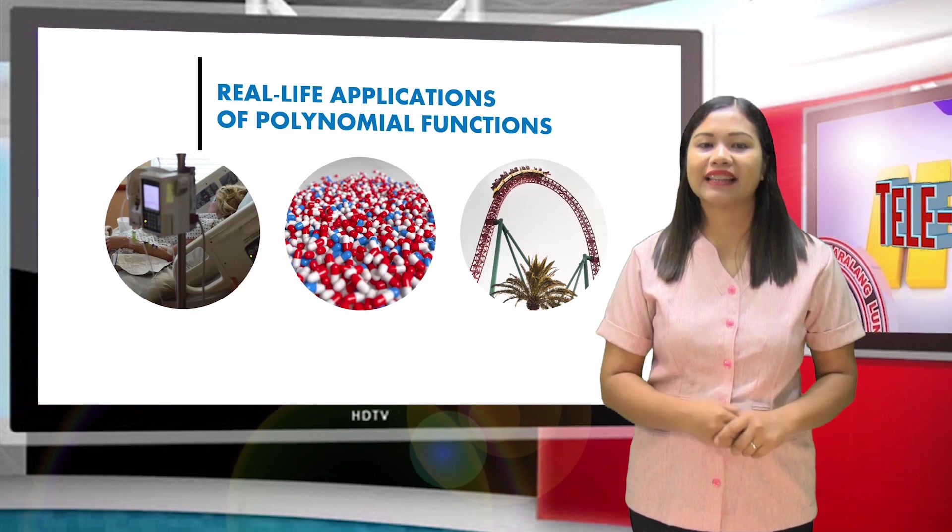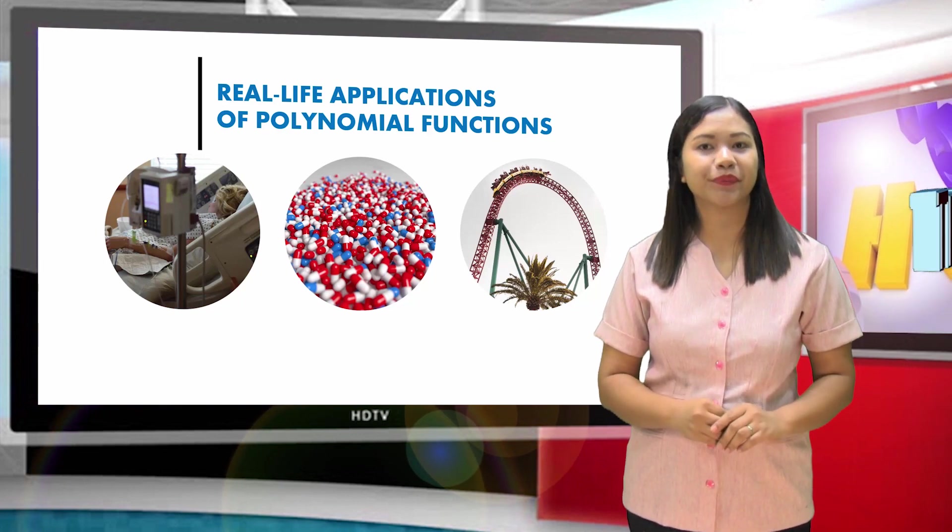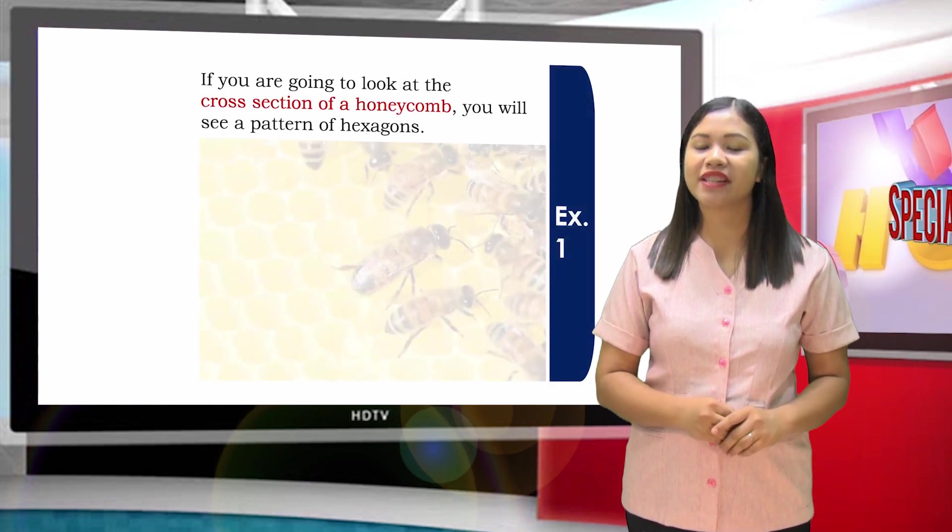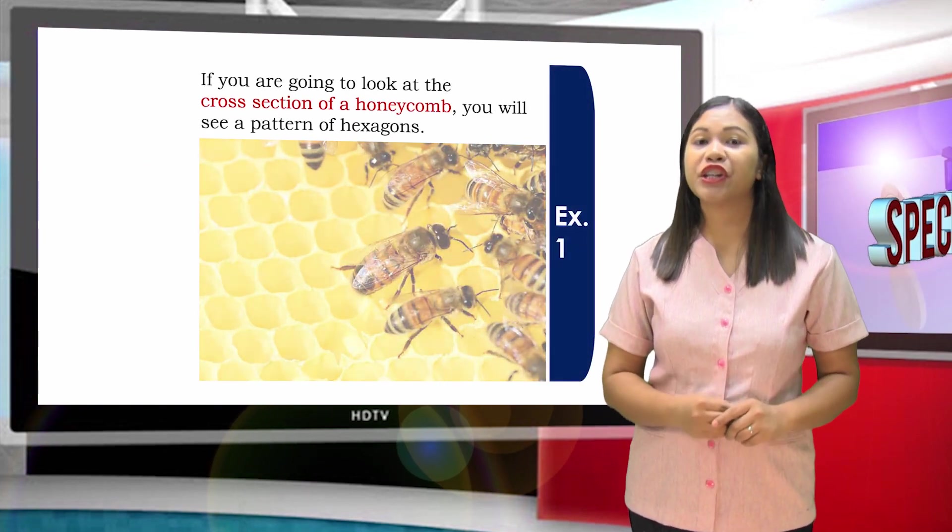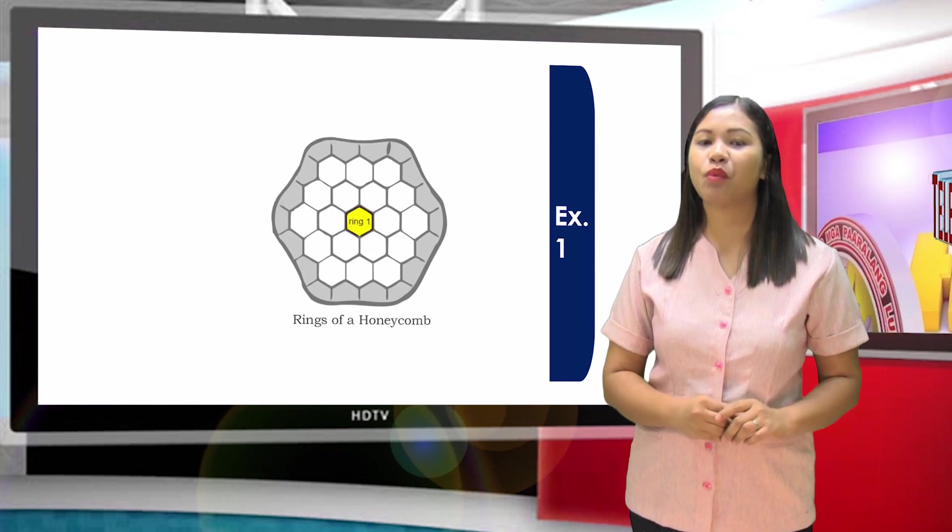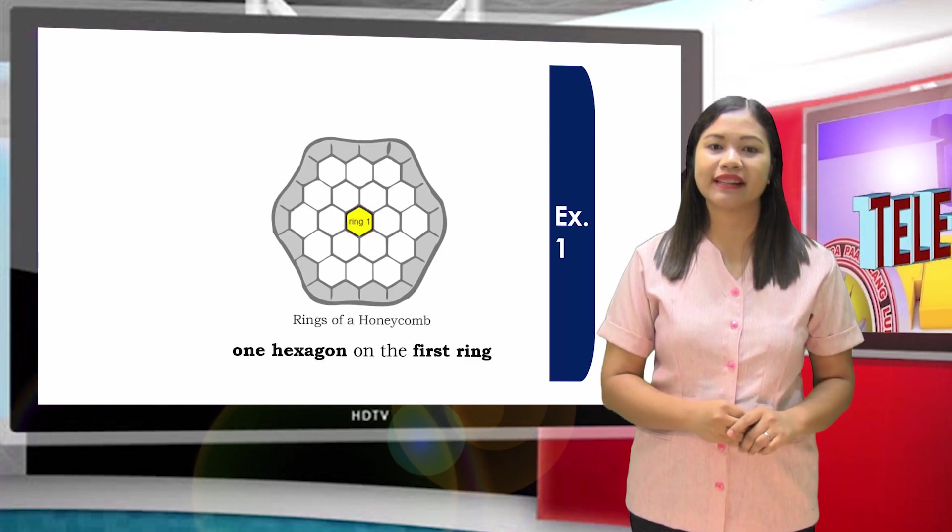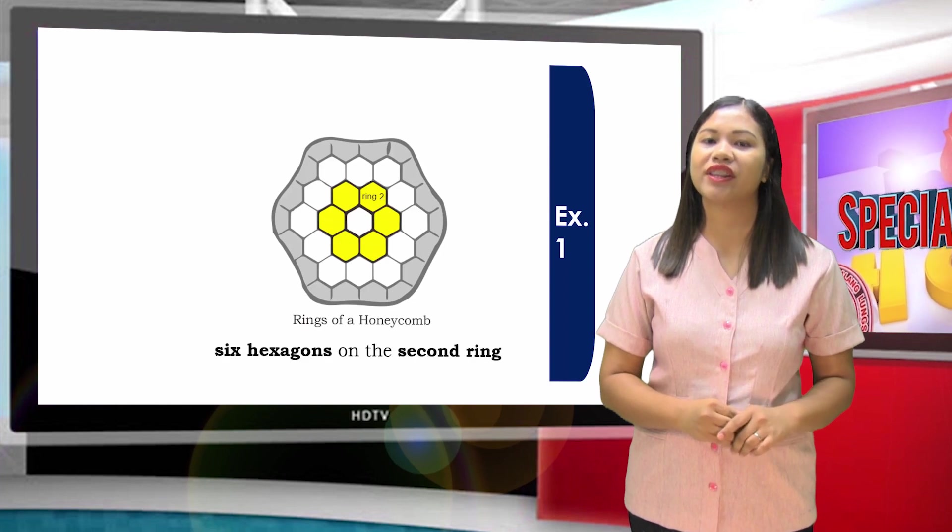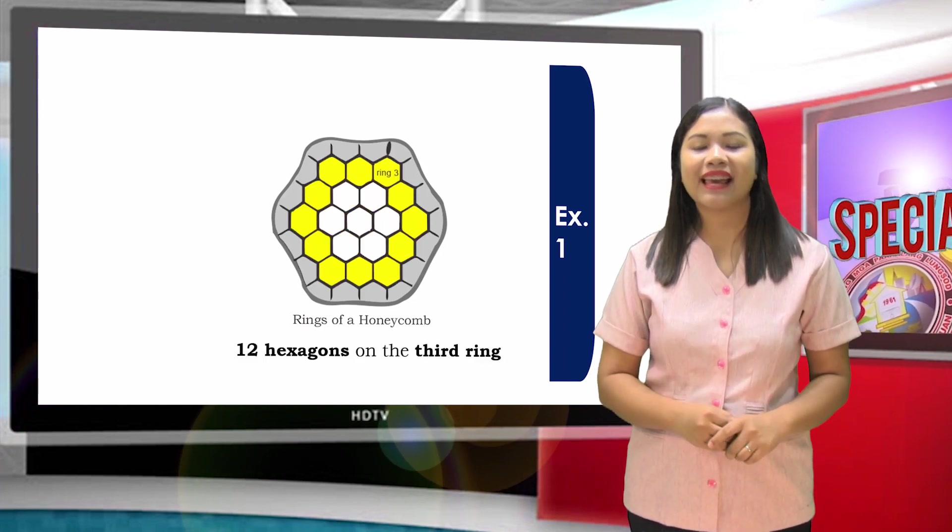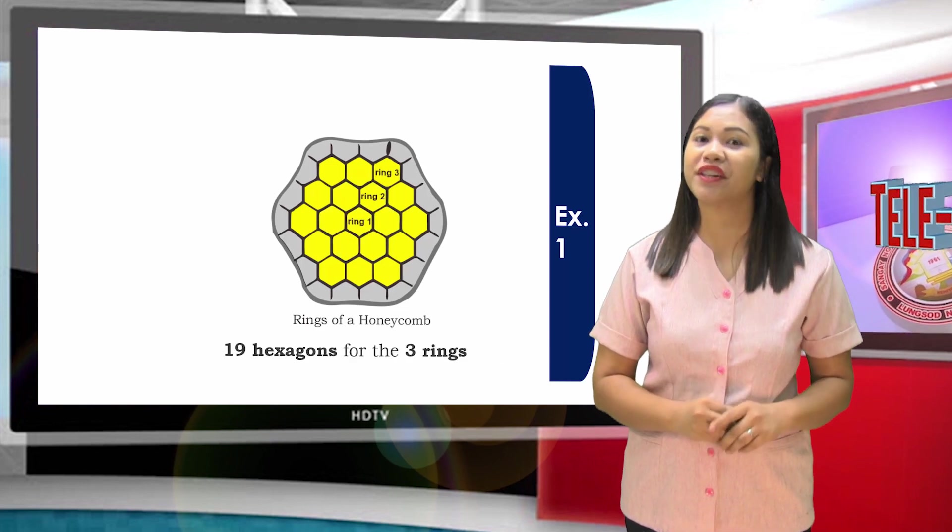But before that, I have a trivia for you. Did you know that if you are going to look at the cross-section of a honeycomb, you will see a pattern of hexagons? This pattern has one hexagon on the first ring, six hexagons on the second ring, and twelve hexagons on the third ring. That's 19 hexagons for the three rings.